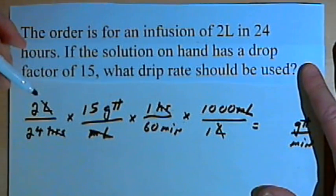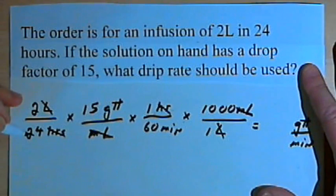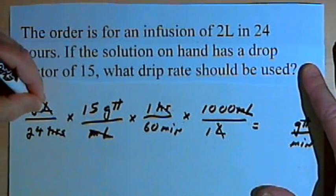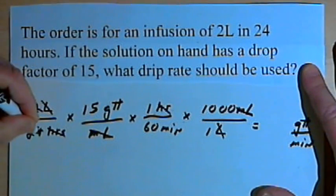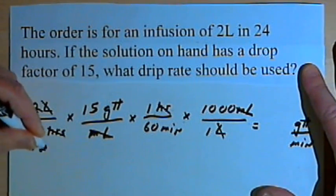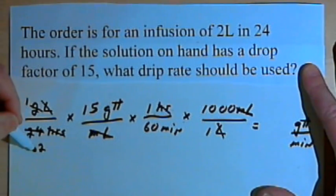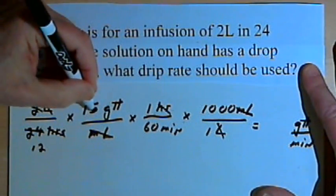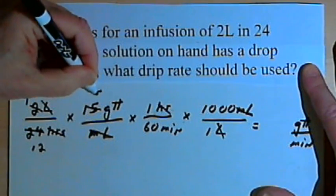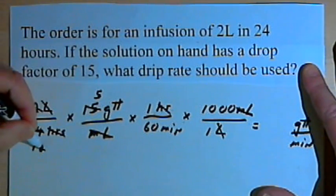Now let's simplify these fractions. I've got 2 over 24, I can divide both by 2. 2 divided by 2 is 1, and 24 divided by 2 is 12. Then I've got 15 and 12, I can divide both by 3. 15 divided by 3 is 5, and 12 divided by 3 is 4.